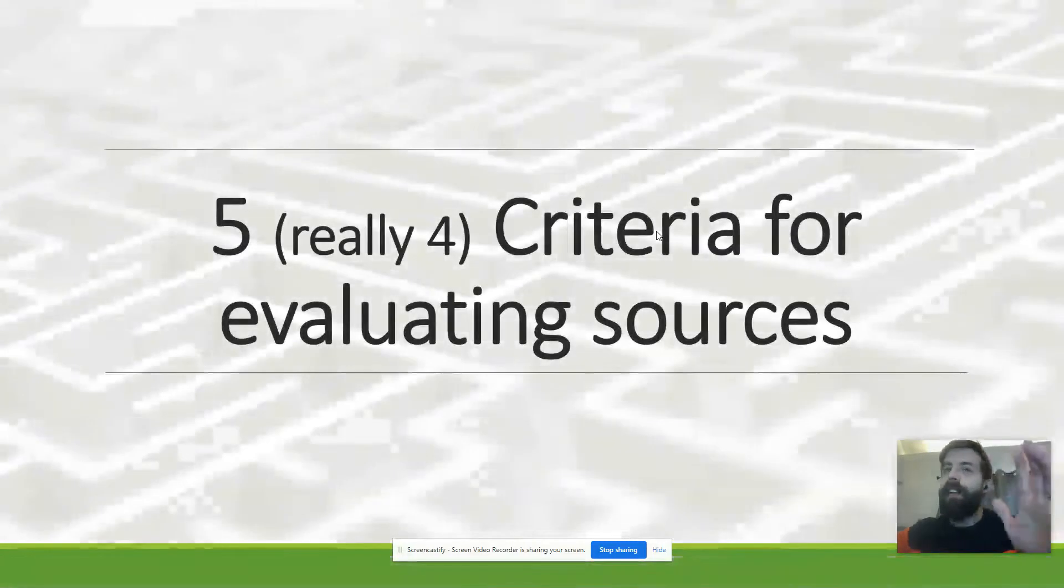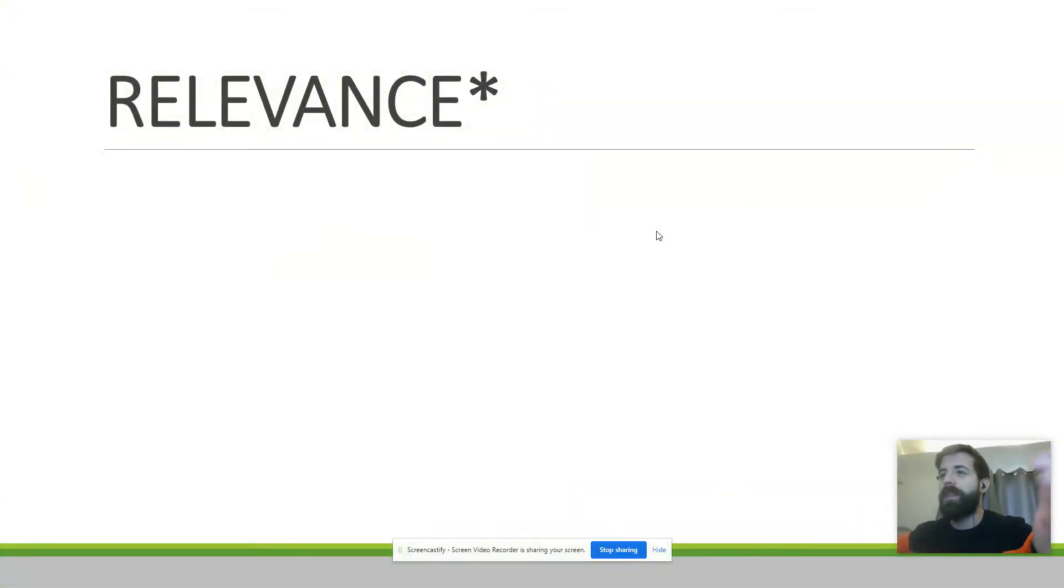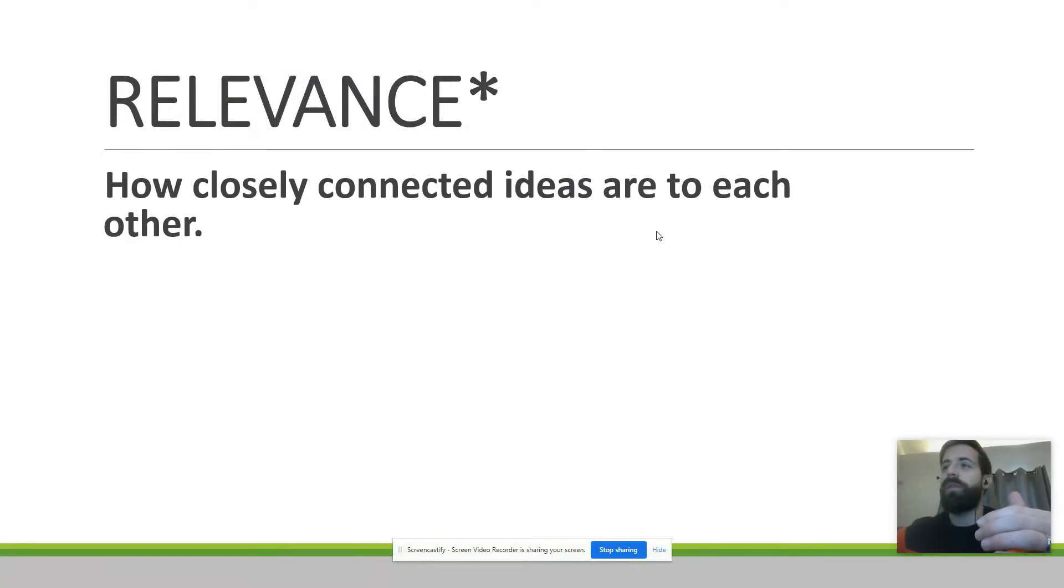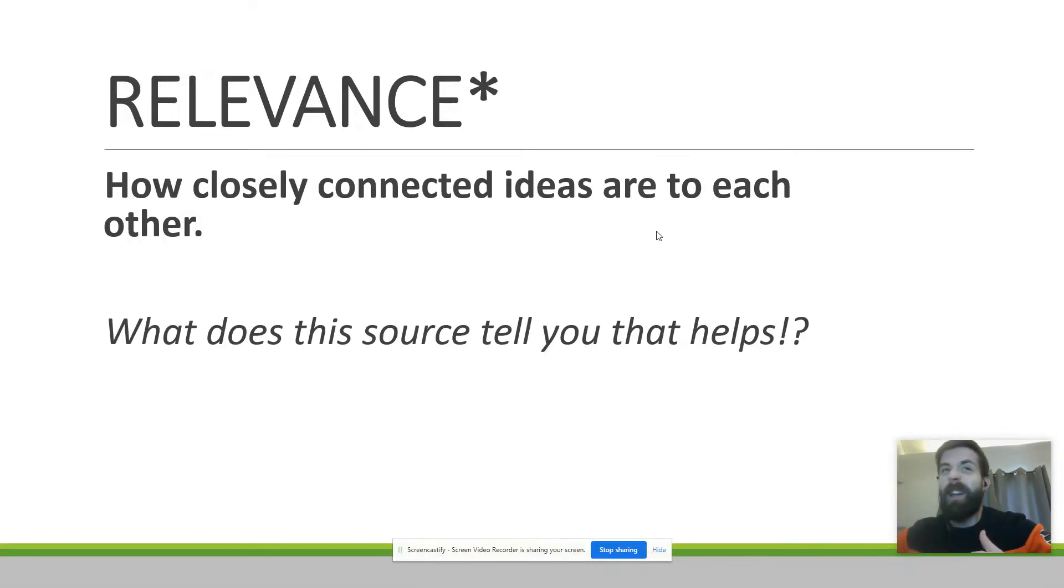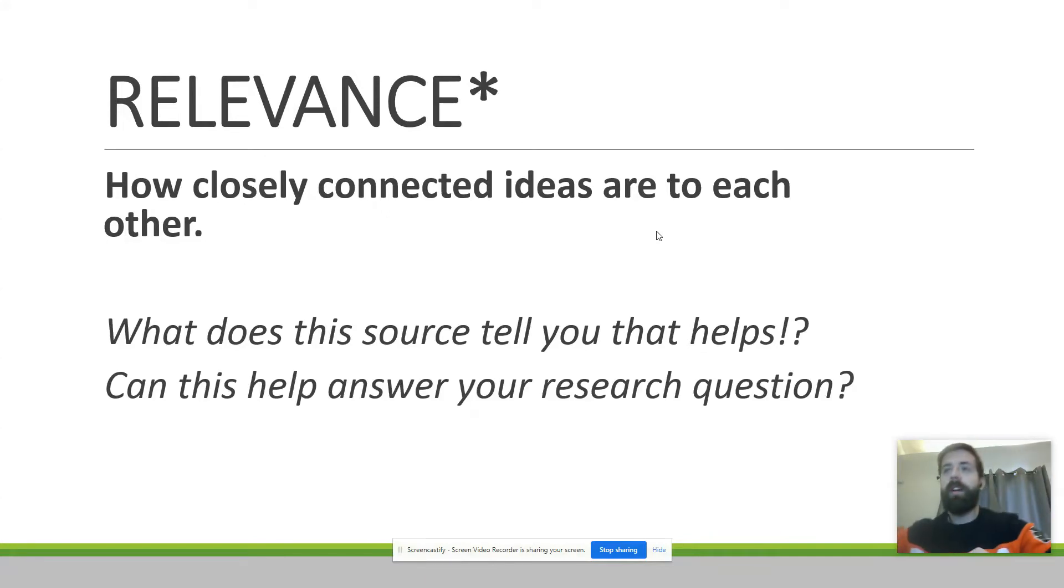I say five, but really there's just four because the first one's not really something I'm too worried about. That's the idea of relevance, how closely the ideas are connected to each other. If you're trying to research something and you find information that's really interesting but it's not relevant to the question you're trying to answer, the information you're trying to find, it's not really going to be that useful to you, right? So the first question you need to ask whenever you see something on the internet is, is this helping me answer my question? Is it helping me figure something out? And oftentimes the answer is no.